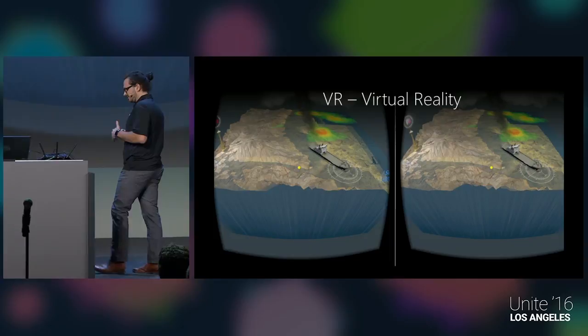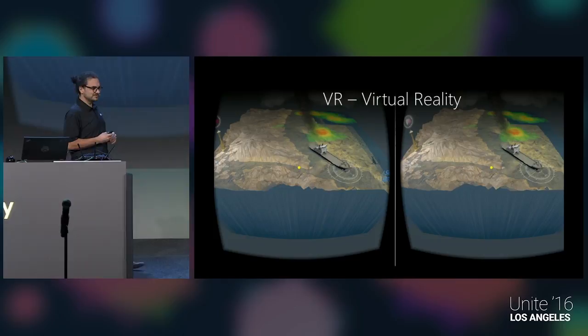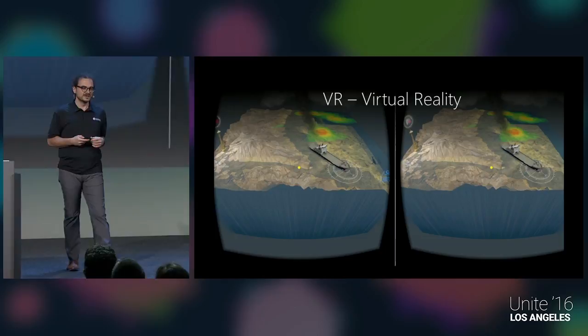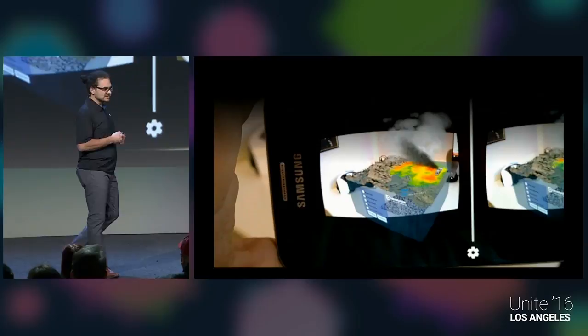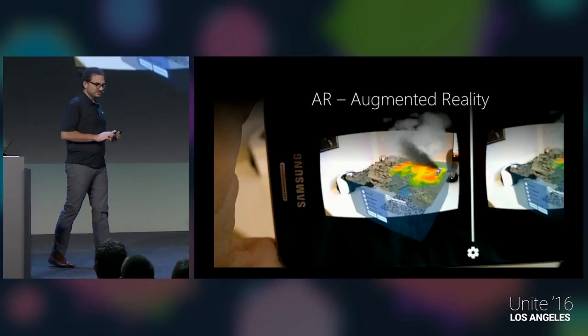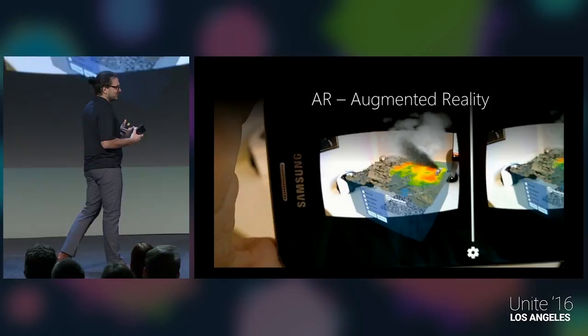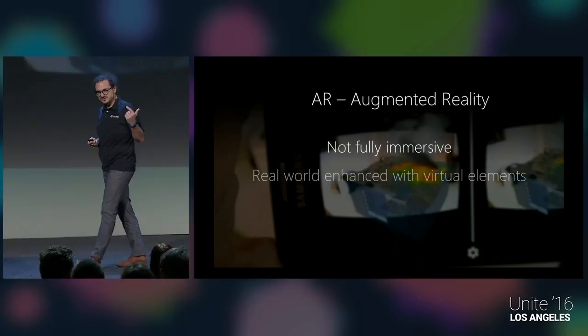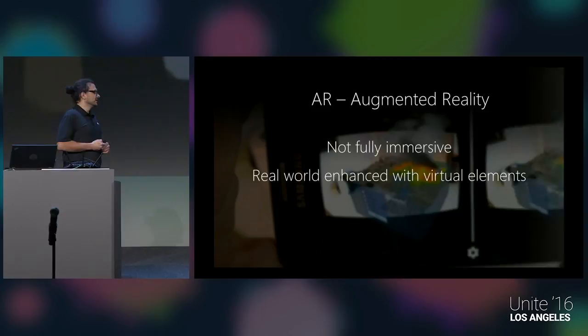Let me set some terminology straight. Virtual reality is a fully immersive multimedia solution — you're fully inside a virtual world and you don't see the outside world around you. Augmented reality, on the other hand, is not fully immersive — you still see the world around you. Most people with a smartphone have an AR app where you point the camera at a marker, the app tracks it, and shows a virtual object on top of it in your screen.